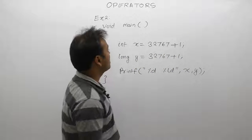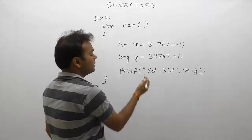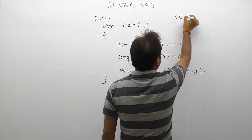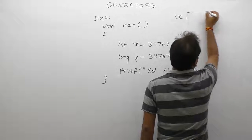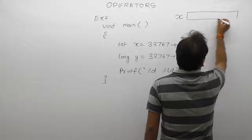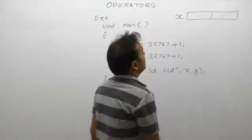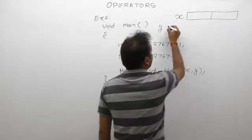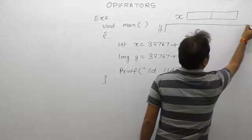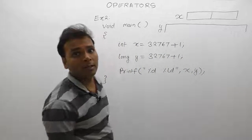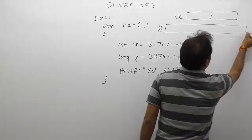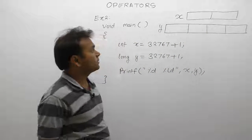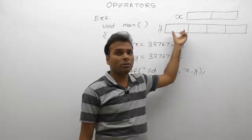The overall process involves two variables: variable x and variable y, with their memory representations. Variable x is an integer type — integer takes only two bytes. Variable y is a long int — long int takes four bytes in C. So the size of long int is four bytes, which is 32 bits.